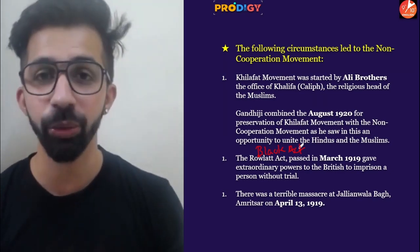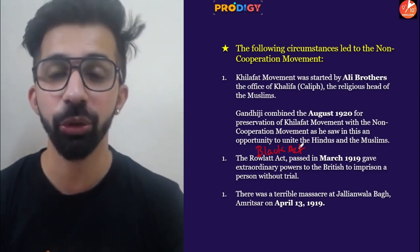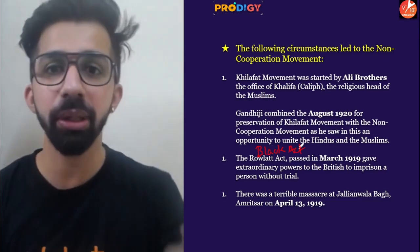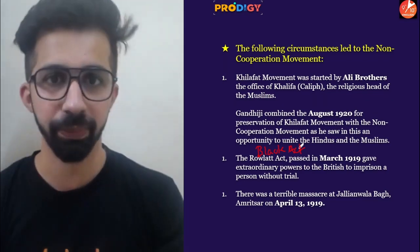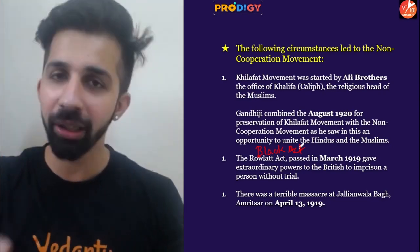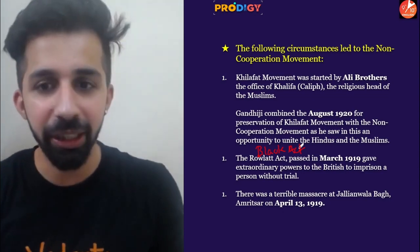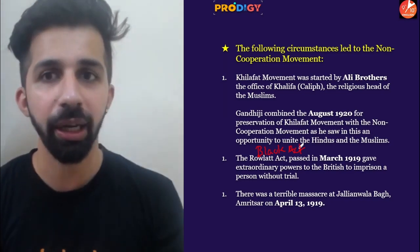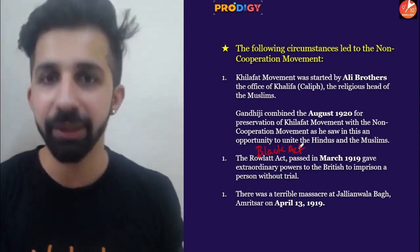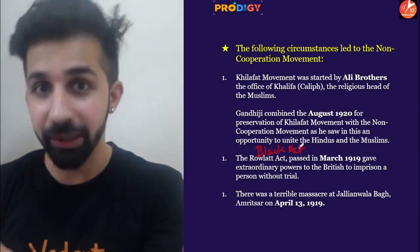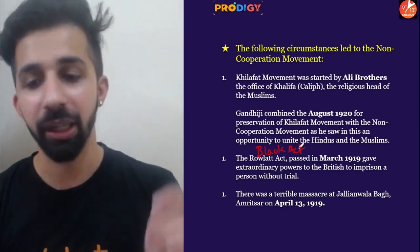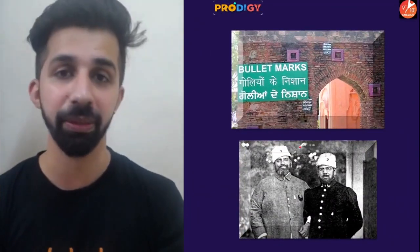One more deadly incident took place — the Jallianwala Bagh Massacre in Amritsar on 13th April 1919. Third homework question: name the person held responsible for this massacre. The British government says nearly 350 people died, but Congress says more than a thousand people were killed. If you visit that place today, you can still find bullet marks there.